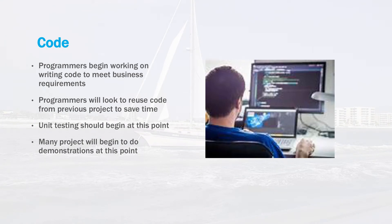This is perhaps the most well-known phase of the software development lifecycle, the coding phase. In this phase, programmers will begin to write code to map out all the functionality of the system. Programmers will look to reuse code they've developed on previous projects to save time. In addition to developing code, programmers will also develop unit tests to ensure the code they're developing meets basic functionality requirements. Many projects will also begin demonstrations to customers at this point to make sure there are no surprises in the end product. The earlier problems can be found in the SDLC process, the cheaper and easier they are to fix. Once code goes into production, fixing bugs and missed requirements can be very expensive.